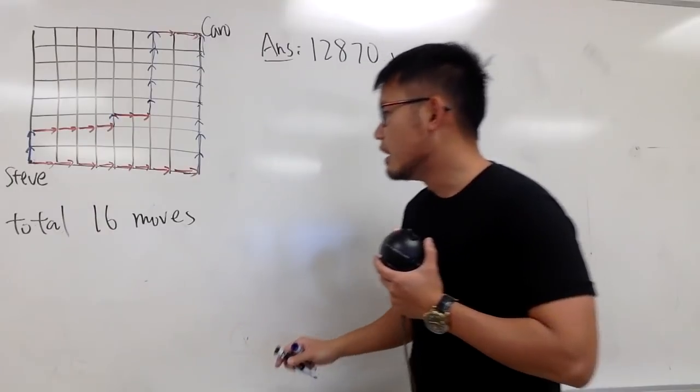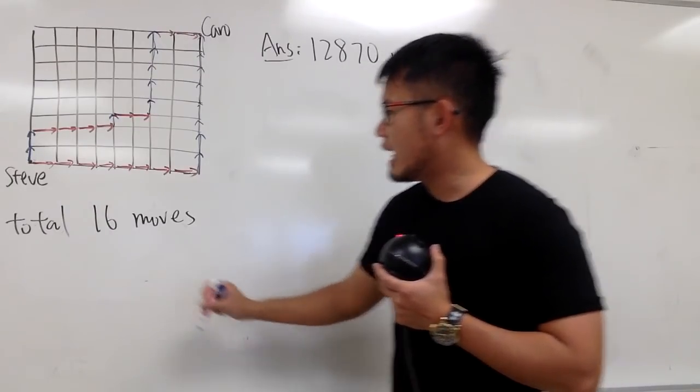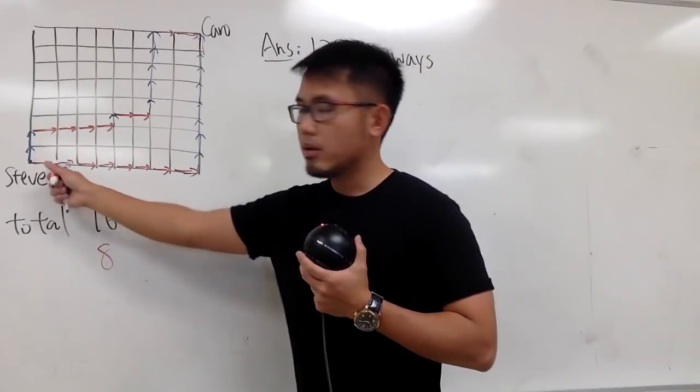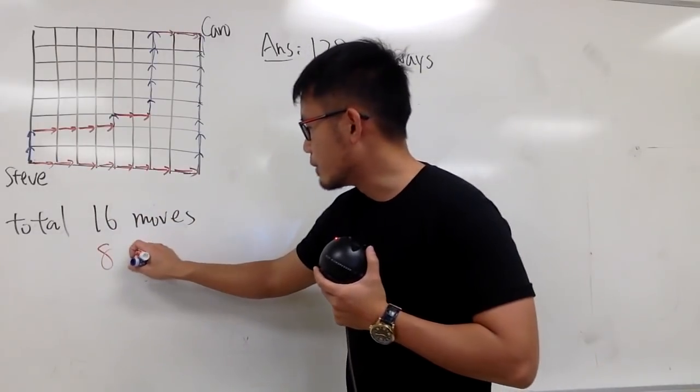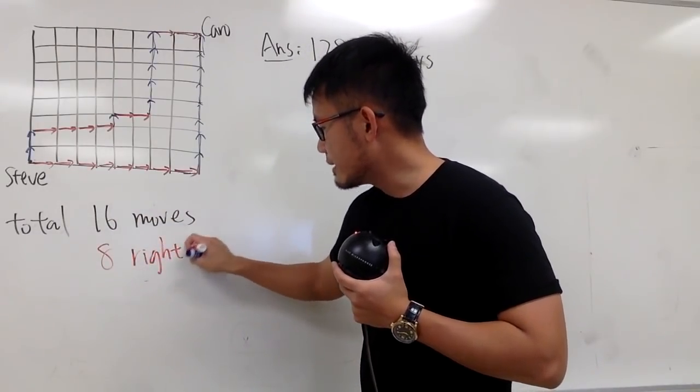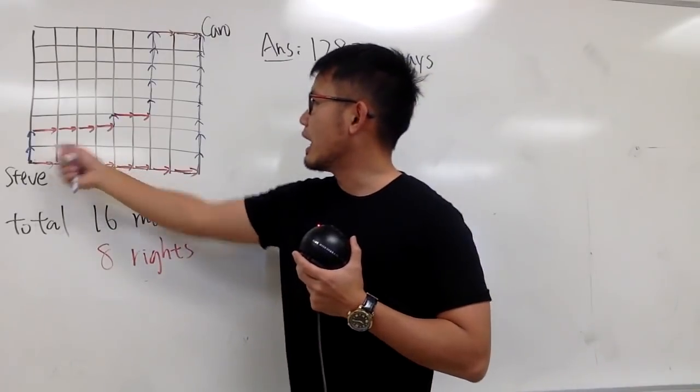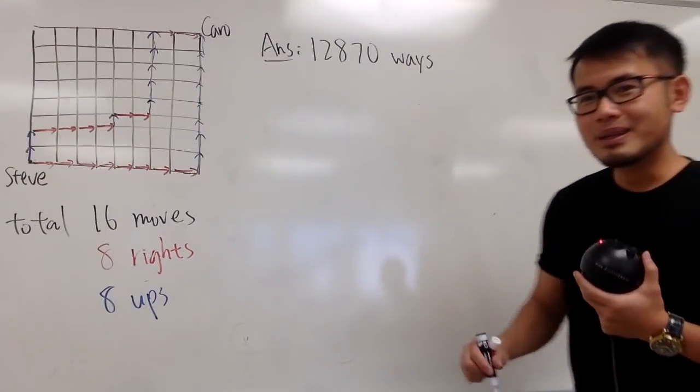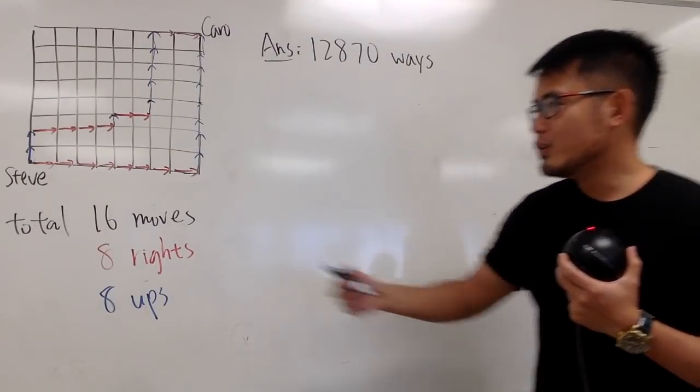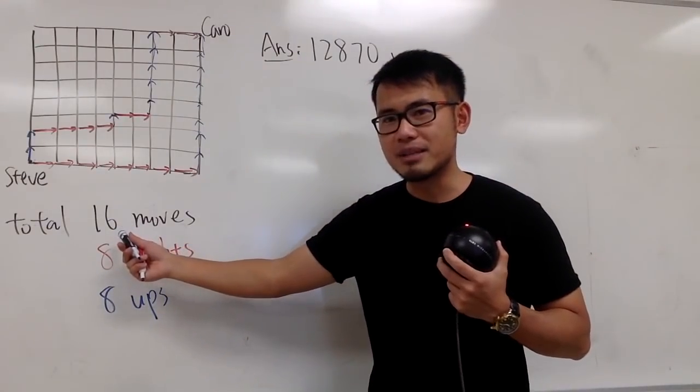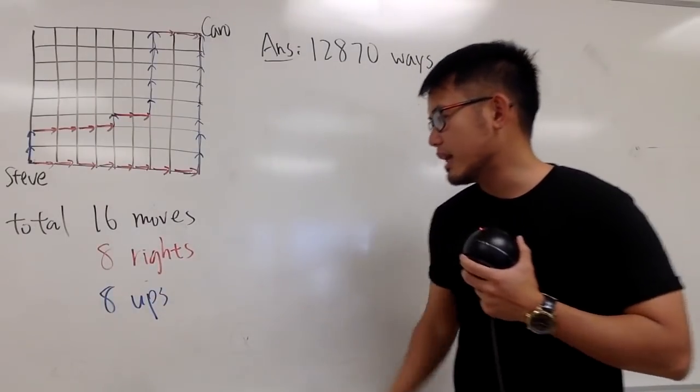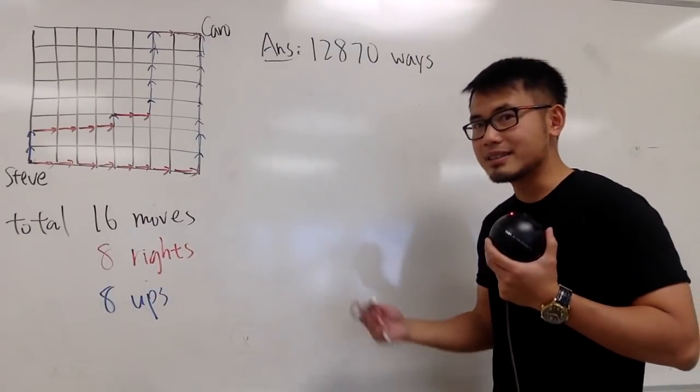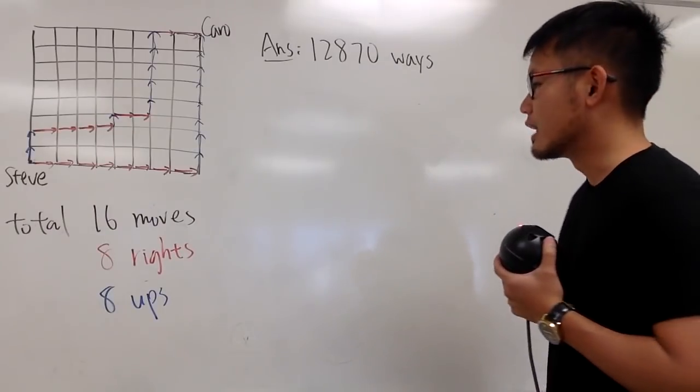So, let me just put this down first for you guys. Notice that we have to make a total of 16 moves. And then among these 16 moves, we have eight of them being to the right. So, I would just put down eight right, and then we also have to have eight of them being up. So, you can just imagine that you have to have a total of 16 comments, and then eight of them have to be to the right, and eight of them have to be up. And that's the deal. This is where the combinatorics comes in.